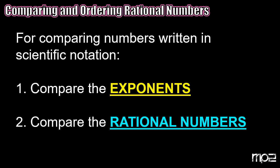If both exponents are the same, we're going to go to step number two: we're going to go ahead and compare the rational numbers. So if you have a decimal or whole number involved, you're going to go ahead and compare those.